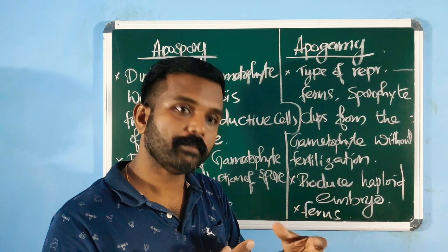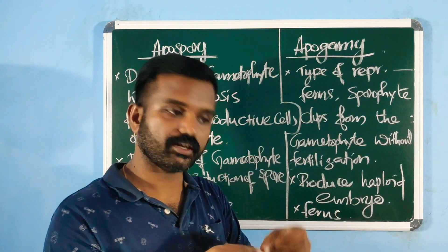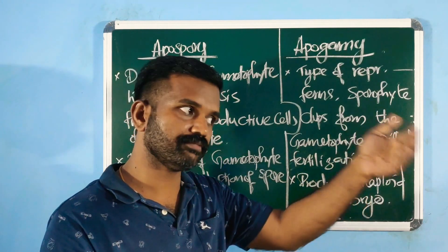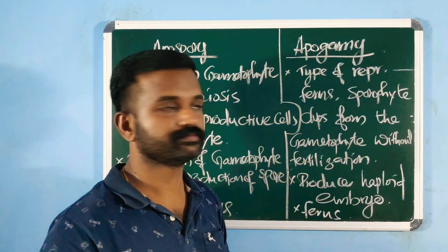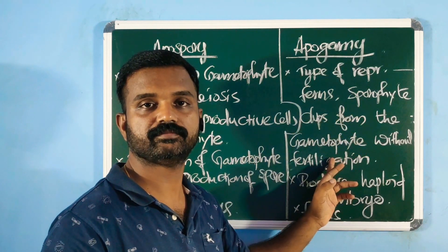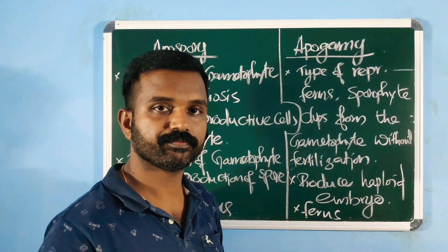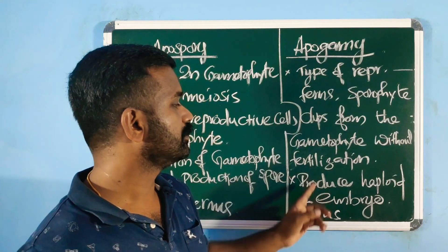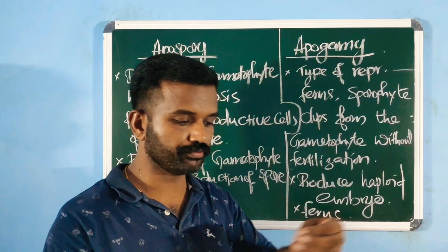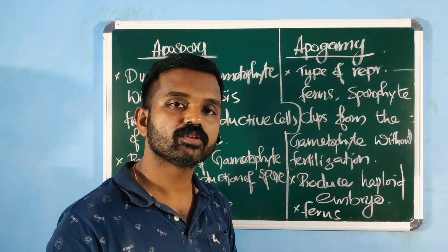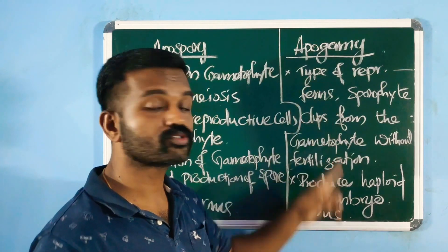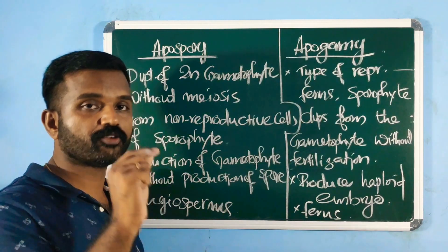Usually, male and female gametes fuse to form a zygote, which develops into an embryo and then into a sporophyte. But in apogamy, the sporophyte develops from the gametophyte without fertilization, producing a haploid embryo because there is no fusion of gametes. This is common in ferns.